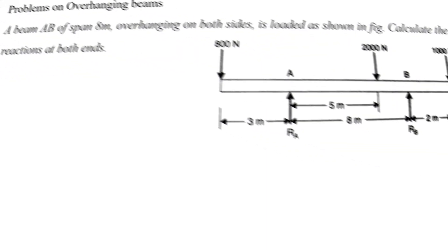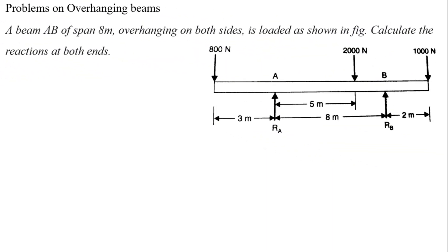Today we are going to discuss problems on overhanging beams. Let us discuss one example problem. A beam AB of span 8 meters, overhanging on both sides, is loaded as shown in the figure. Calculate the reactions at both ends.